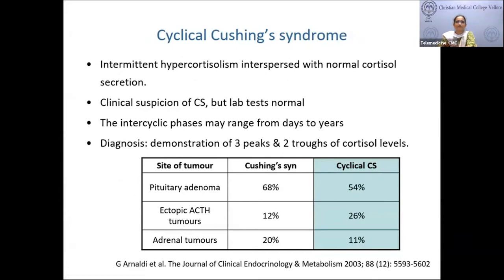Cyclical Cushing syndrome involves intermittent hypercortisolism interspersed with normal or low cortisol levels. Suspect it when a patient has florid clinical features of Cushing's but normal lab tests. The intercyclic gap between peaks can range from days to months or years. The cause is usually a pituitary adenoma or ectopic ACTH-secreting tumor, and diagnosis requires demonstration of three peaks and two troughs of cortisol, either in urinary or salivary cortisol.